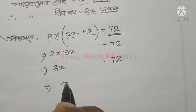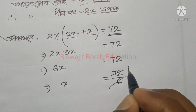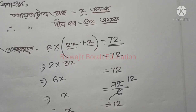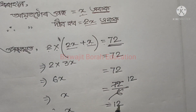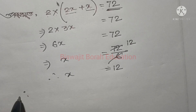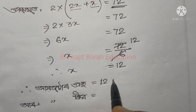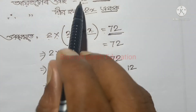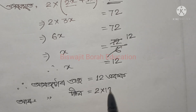So next line: x equal 72 divided by 6, which is 12. So x equal 12.